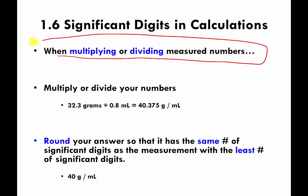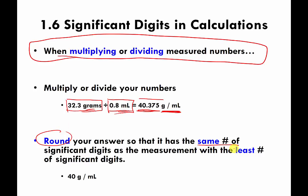Here is the rule for multiplying or dividing measured numbers. Suppose I have 32.3 grams divided by 0.8 milliliters. The calculator gives 40.375, and the units are grams per milliliter. The rule is: you round your answer so that it has the same number of significant digits as whichever starting number had the least number of significant digits. So we look at 32.3 — that has three significant digits — and 0.8, which has only one significant digit.